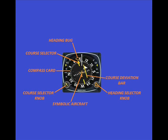The heading selector knob is used to position the heading select bug. The course deviation bar performs the same function as the CDI on a basic VOR indicator, depicting how far you are off course.